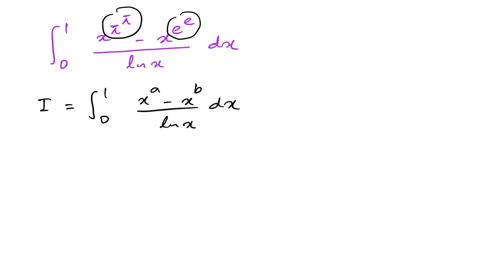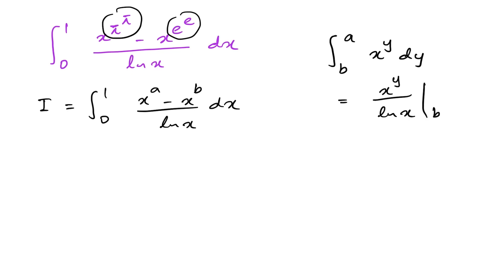Now I'm going to introduce an auxiliary integral. If we take the integral from b to a of x^y with respect to y, integrating gives x^y over natural log of x, evaluated from b to a. Applying the upper and lower limits, we get (x^a minus x^b) over natural log of x.